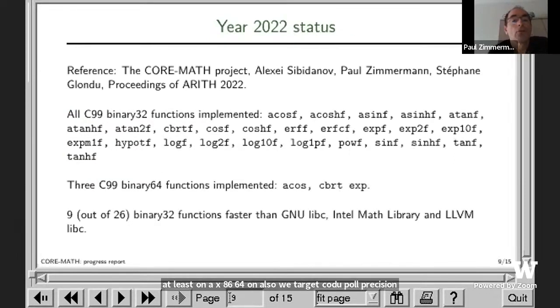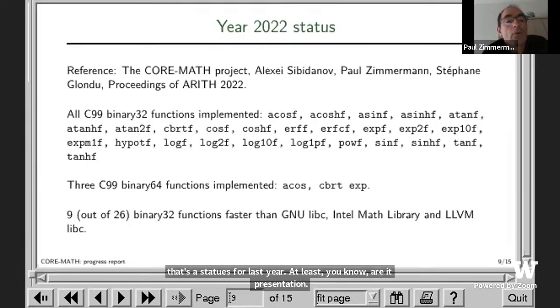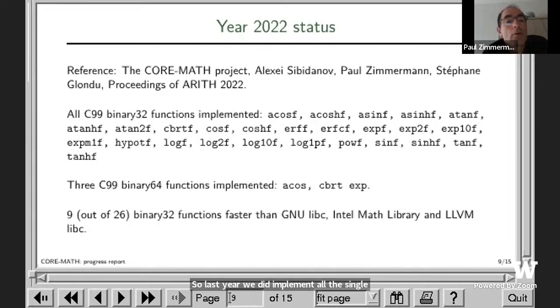That's the status for last year, at least in our Arith presentation. Last year we did implement all single precision functions plus three double precision functions: the arccosine, cubic root, and the exponential. At that time, out of the 26 binary32 functions which were implemented, nine of them were already faster than the glibc, the Intel library, and the LLVM libc.